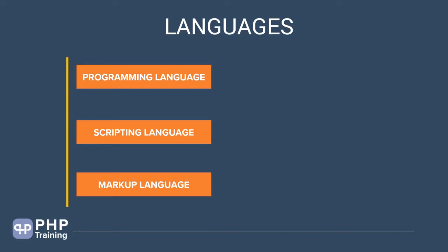You have to understand what you're trying to learn — whether it is a programming language, scripting language, or a markup language. Examples of programming languages are C, C++, and Java. The most important job of a programming language is to interact with the machine. C, C++, and Java are famous examples of how they can interact with machines, even at the hardware level using machine-level language.